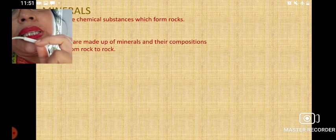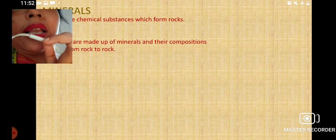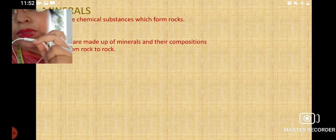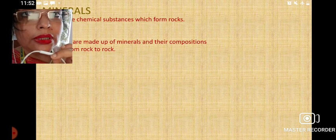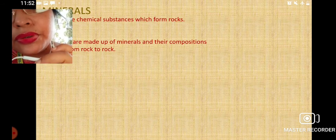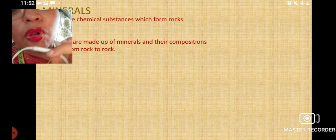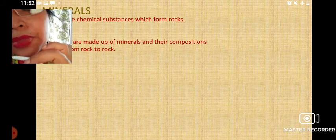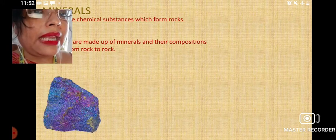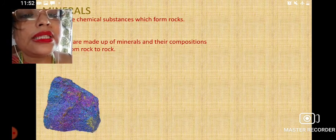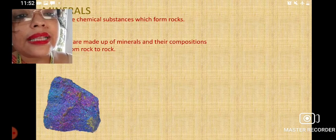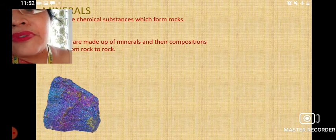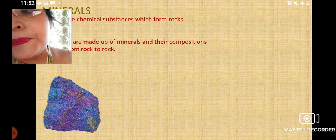A mineral is actually a chemical substance. These chemical substances form the rocks, so all the rocks are made up of minerals and their composition varies from rock to rock. Minerals are mainly found in the form of crystals — as you can see in the picture, small small crystals — and they are formed on the earth's surface.